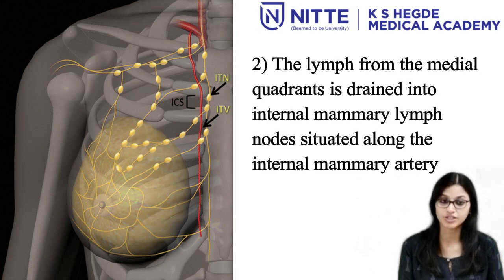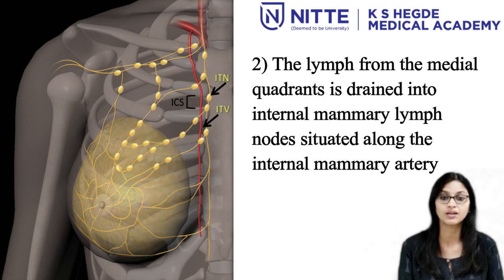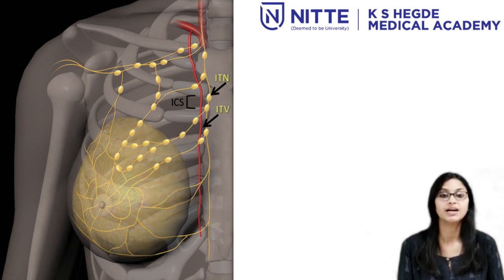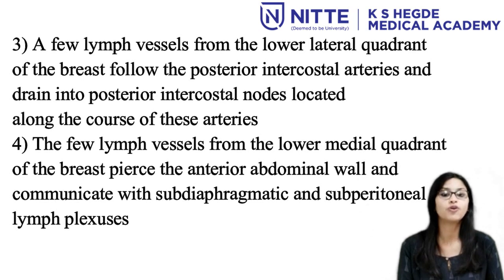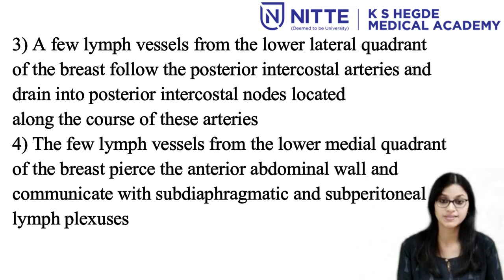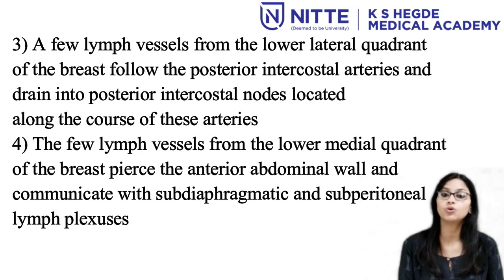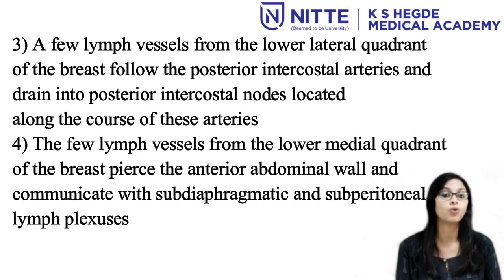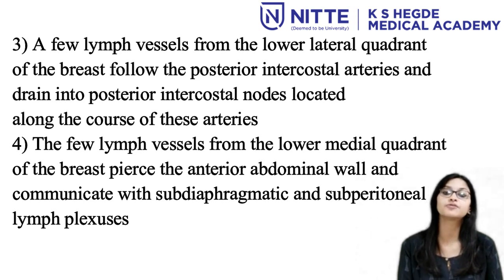The lymph from the medial quadrant is drained into the internal mammary lymph nodes situated along the internal mammary artery. A few lymph vessels from the lower lateral quadrant of the breast follow the posterior intercostal arteries and drain into the posterior intercostal nodes located along the course of these arteries. A few lymph vessels from the lower medial quadrant of the breast pierce the anterior abdominal wall and communicate with the subdiaphragmatic and subperitoneal lymph plexus.